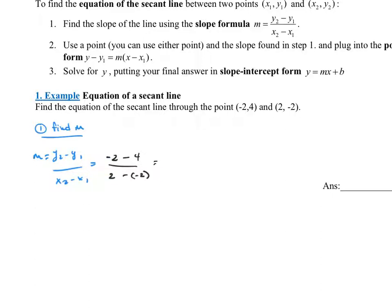So on top is negative 2 minus 4, which would be negative 6. And on bottom is 2 minus negative 2. Be very careful with that. You're subtracting a negative. Changes to addition. That would be a 4. So if I simplify this, I'm going to end up with negative 3 halves. Again, this is my slope of my line. So that was the first step, to find the slope.